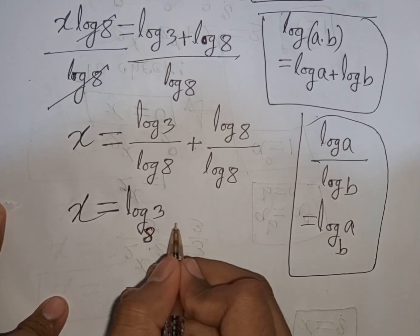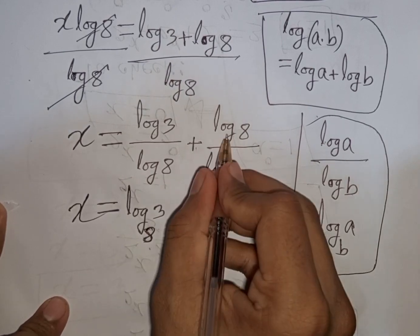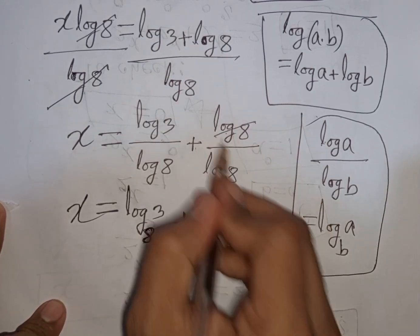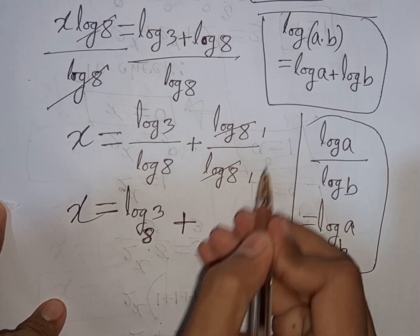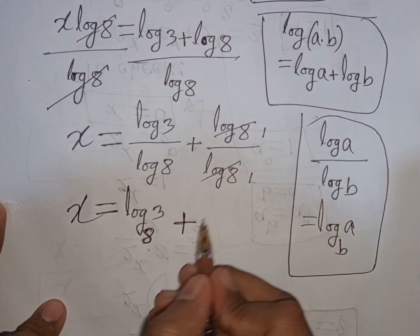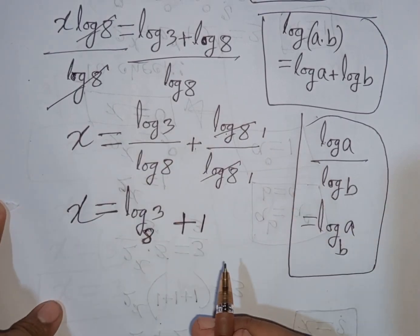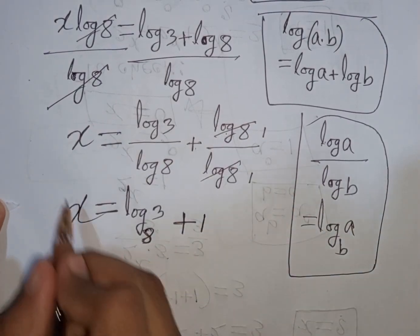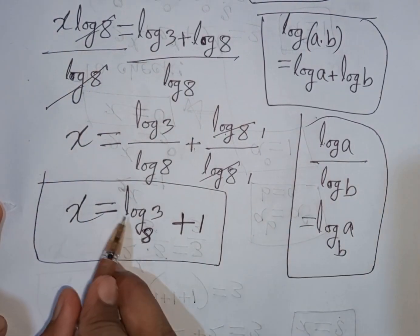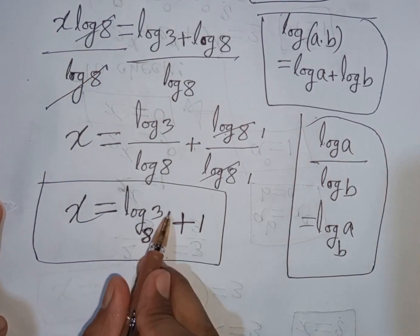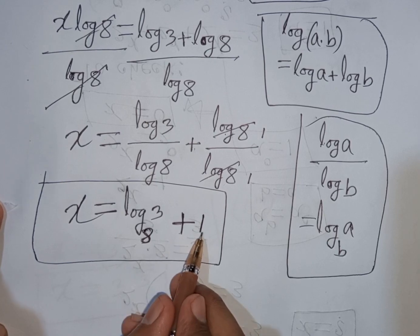Plus log 8 divided by log 8 — that means this will be cancelled, giving 1. So our final answer will be x is equal to log 3 base 8 plus 1.